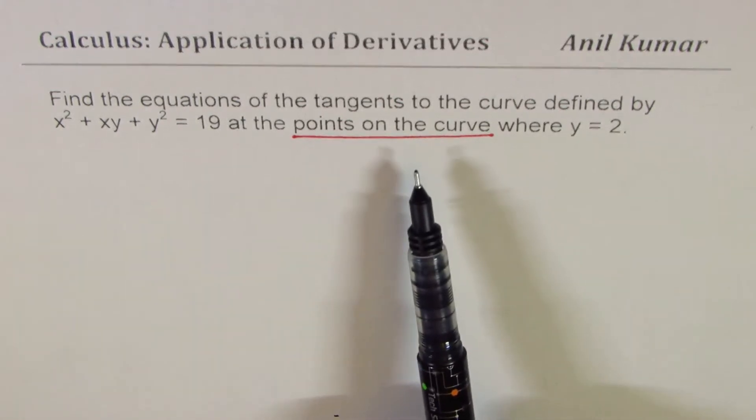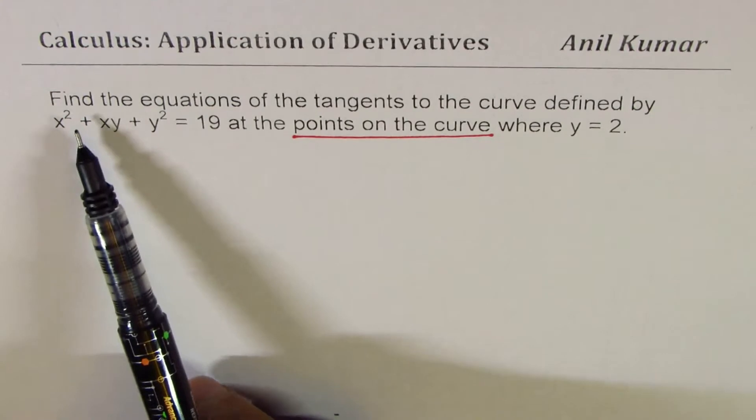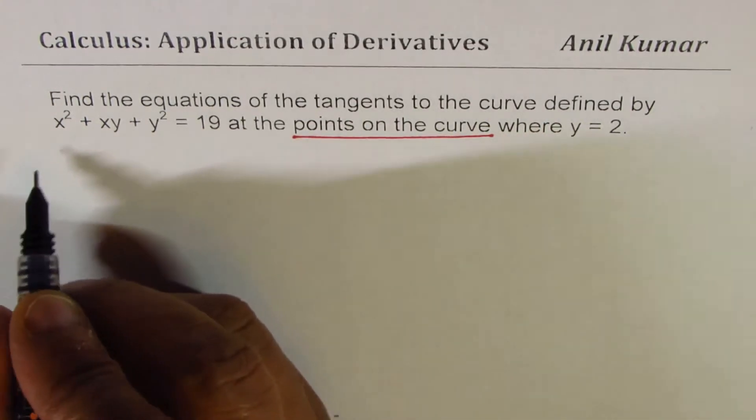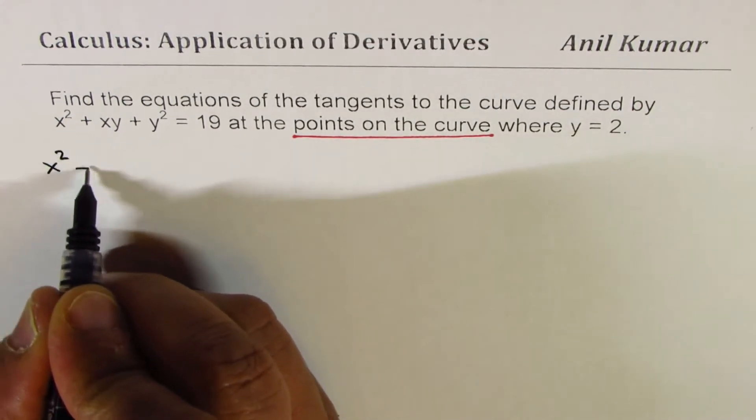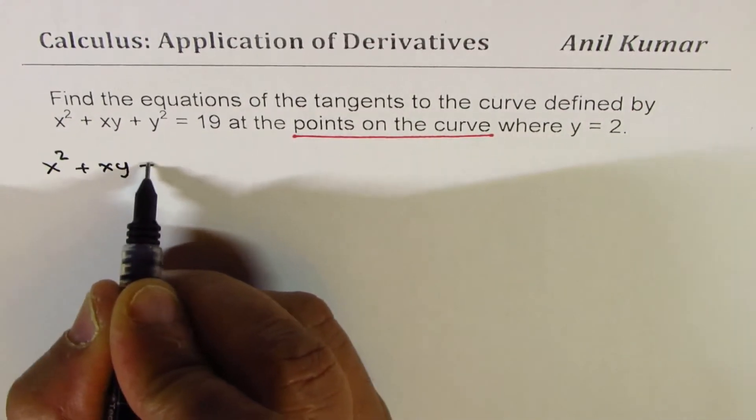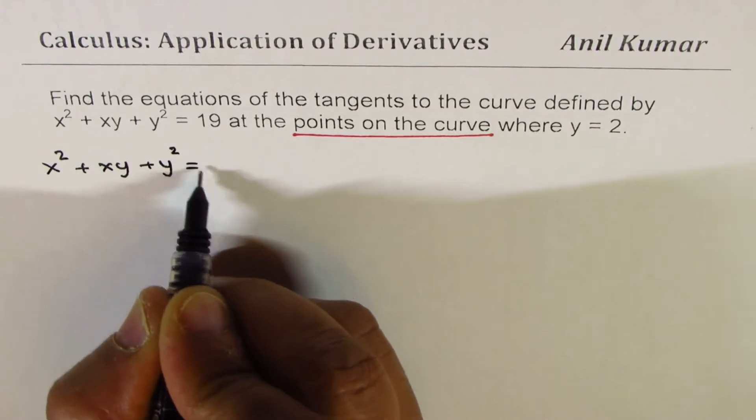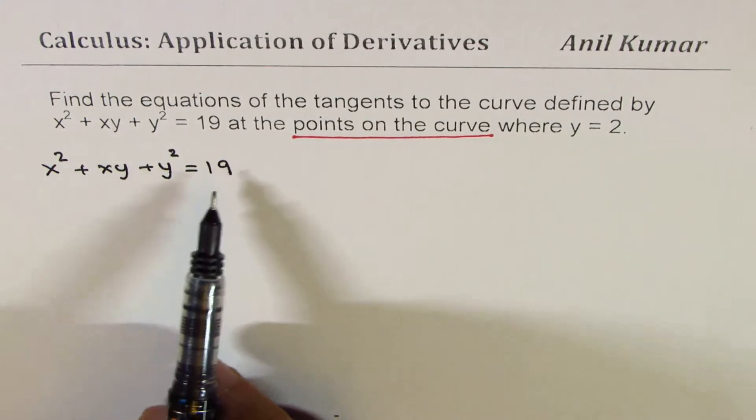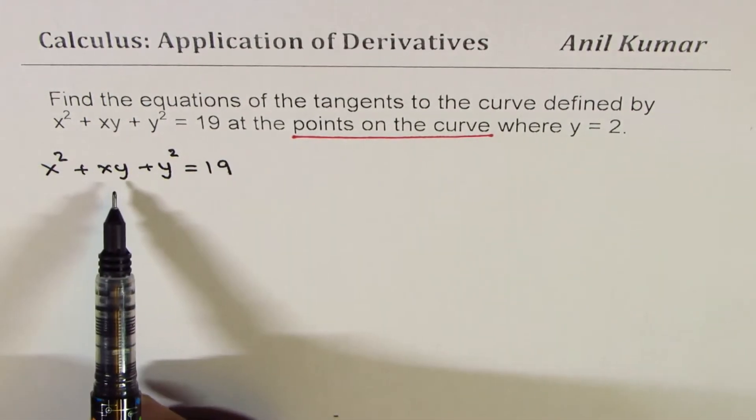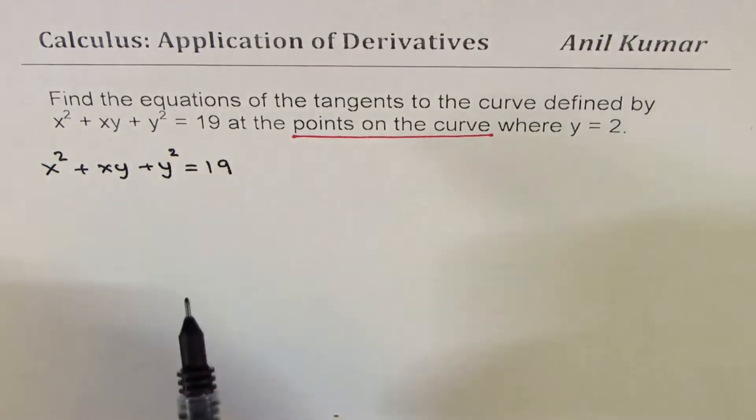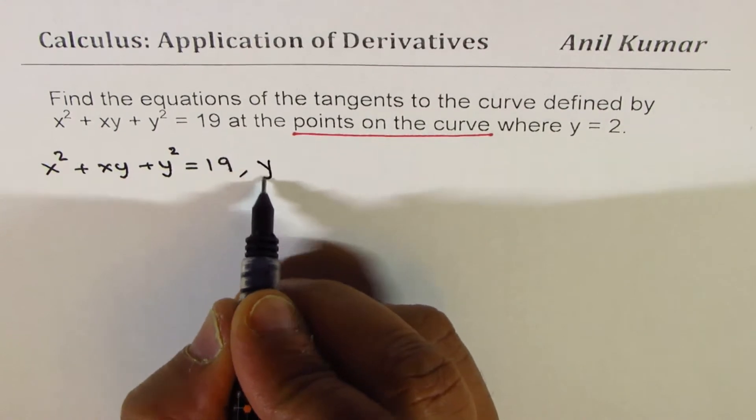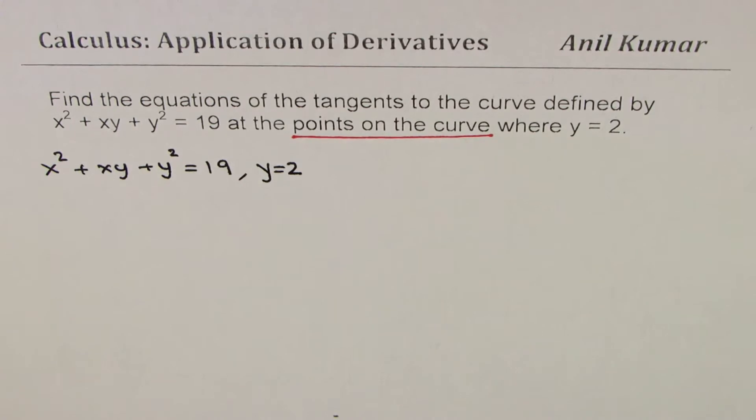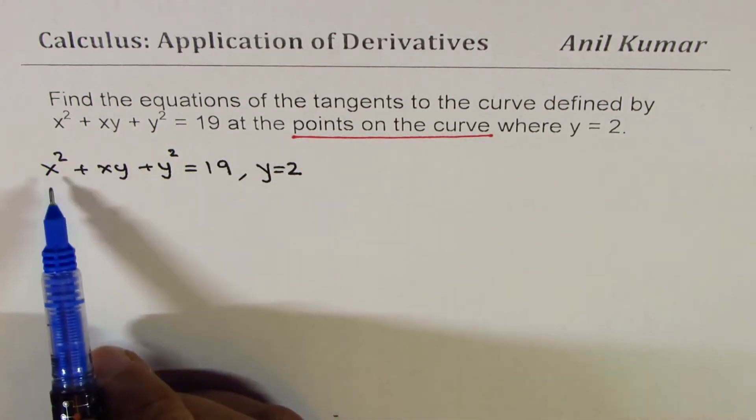So with that, let us begin to answer. We need to find equation of tangents to the curve, which is defined by x² + xy + y² = 19, where y = 2. So, if y is equal to 2, let us find what x is. So, we know where y equals to 2. So, let us substitute 2 in this equation and find the value of x.